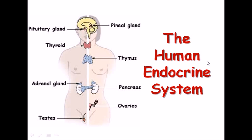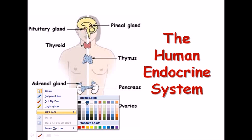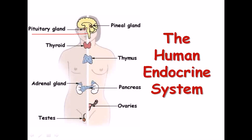In this picture you can see the endocrine glands found in both male and female bodies. There are some common glands and some sex-specific glands. The common glands include the pituitary gland, which is the master gland, the pineal gland in contact with the brain, the thyroid gland, the thymus just below the thyroid, and the adrenal gland on top of the kidney. In males we have testes; in females we have ovaries.